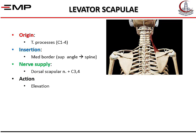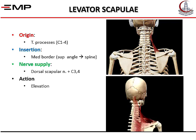The third muscle — the first one in the deep group — is the levator scapulae. It takes origin from the transverse processes of cervical vertebrae C1 to C4. It is inserted into the medial border of the scapula from the superior angle to the spine. It is supplied by the dorsal scapular nerve from the roots of the brachial plexus and from C3 and C4 from the cervical plexus. Its action is elevation of the scapula together with the upper fibers of the trapezius.